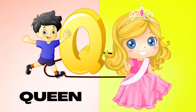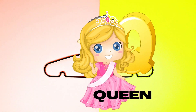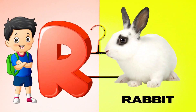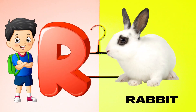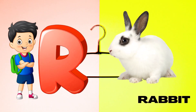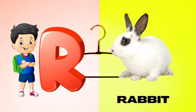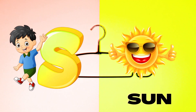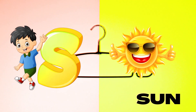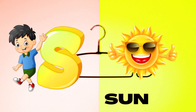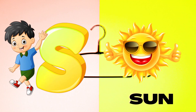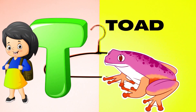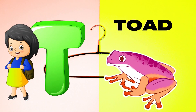Q is for Queen, Q-Q-Queen. R is for Rabbit, R-R-Rabbit. S is for Sun, S-S-Sun. T is for Toad, T-T-Toad.